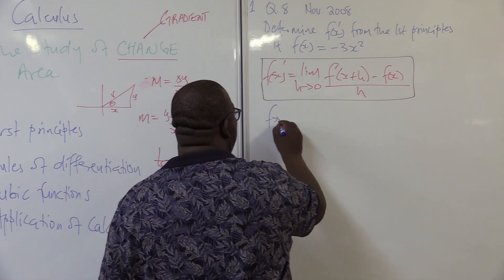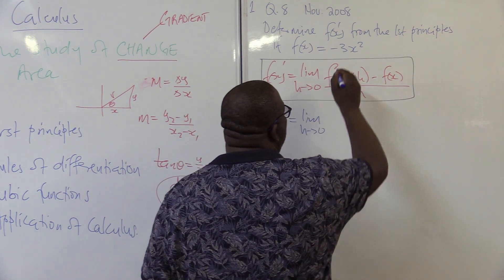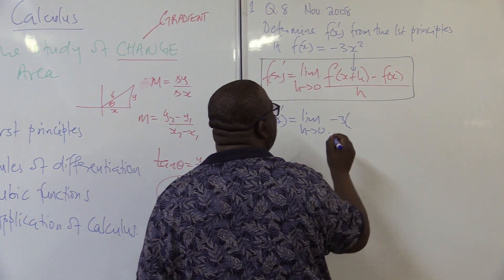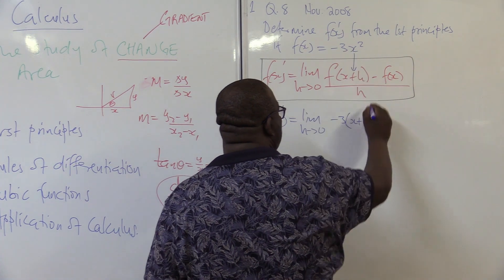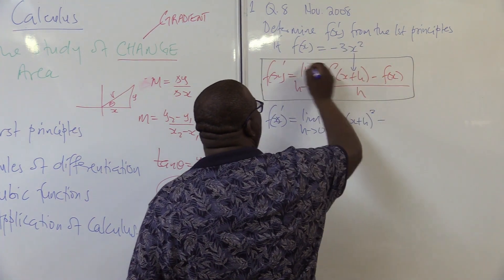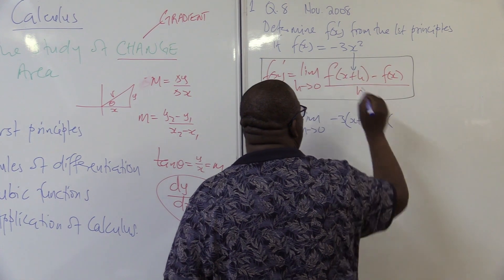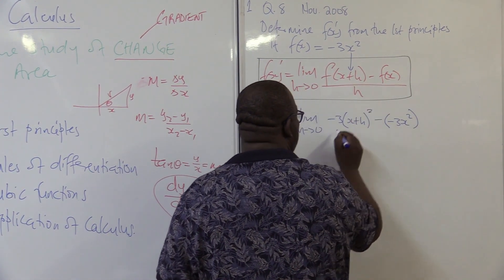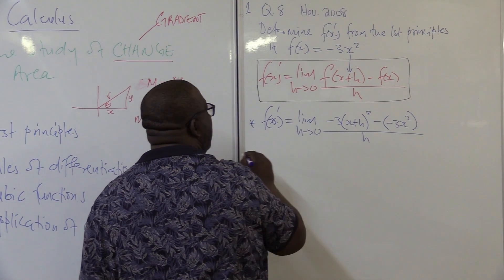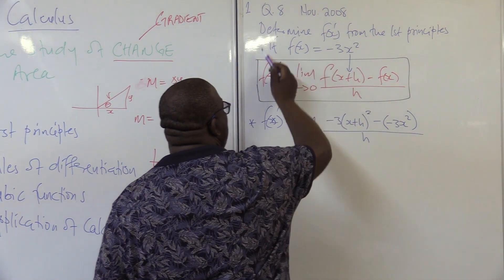So F of X prime is equals to the limit as H approaches 0 of let's write it. The first thing you write minus 3 into where there is X now we're pushing X plus H so it is X plus H this is squared all right then you subtract F of X what is F of X? It is minus 3 X squared so it's minus into F of X which is minus 3 X squared this is all over H.